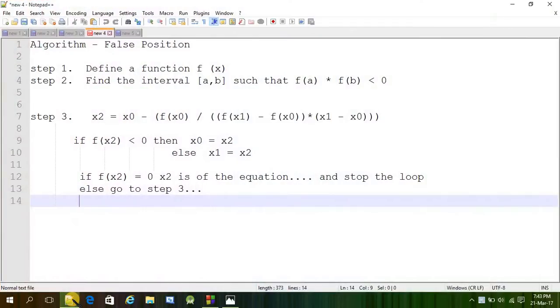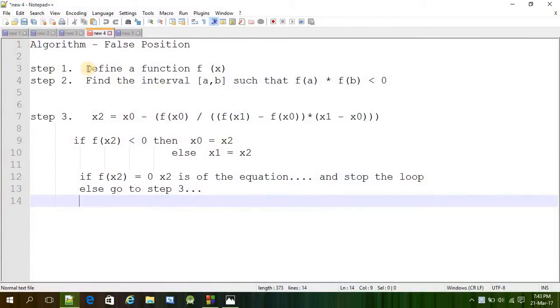Here is the algorithm for it. First we have to define the function, let's say f, function of x. Step 2 is find the interval a and b such that f(a) times f(b) is less than 0. That means the multiplication of these two values should be a negative value which is less than 0.